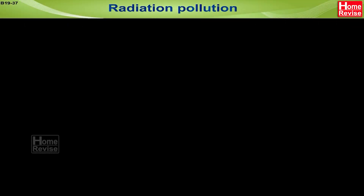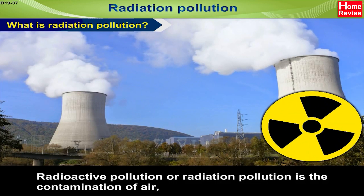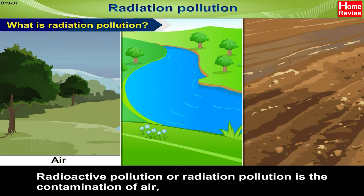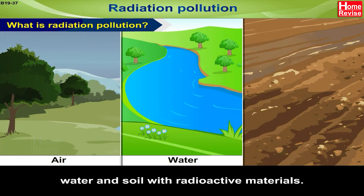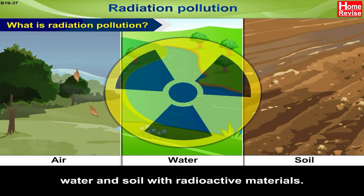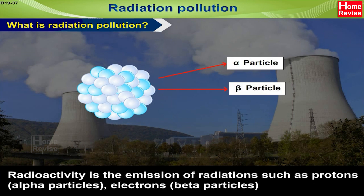Radiation pollution — what is radiation pollution? Radioactive pollution or radiation pollution is the contamination of air, water, and soil with radioactive materials. Radioactivity is the emission of radiation such as protons, that is alpha particles, and electrons, which is beta particles.